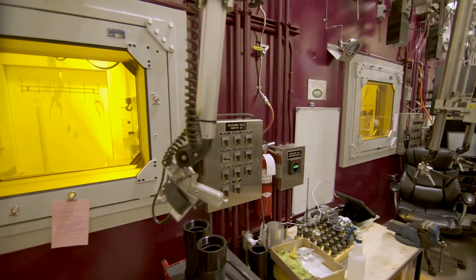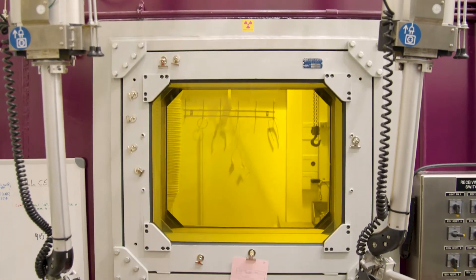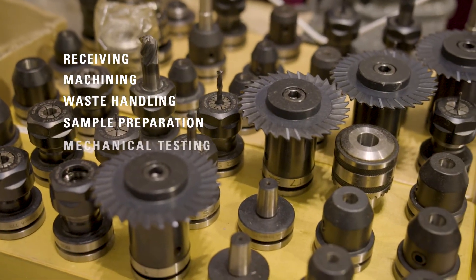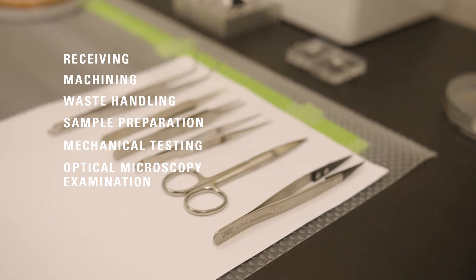The central CANS facility is a suite of custom-designed hot cells with five separate workstations for receiving, machining and waste handling, sample preparation, mechanical testing, and optical microscopy examination of irradiated material samples.